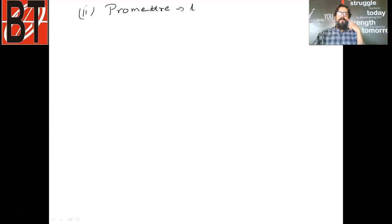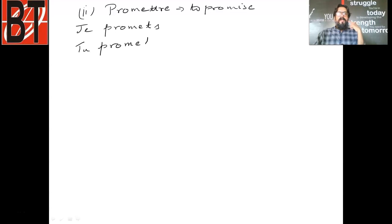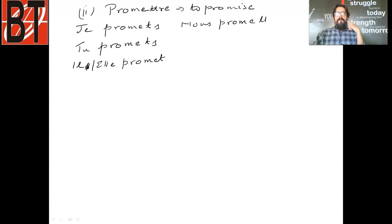The second verb in this family is 'promettre'. What is promettre? To promise. The conjugation is: je promets, tu promets, il/elle promet, nous promettons, vous promettez, ils/elles promettent.